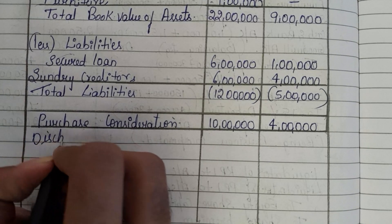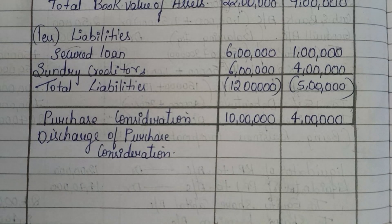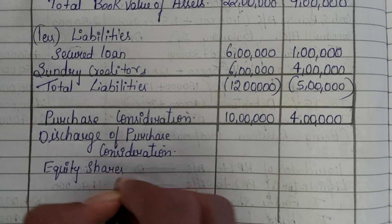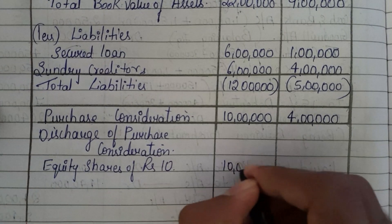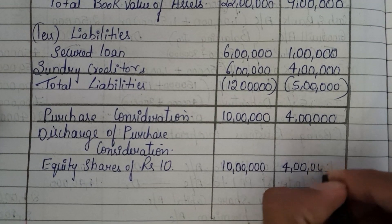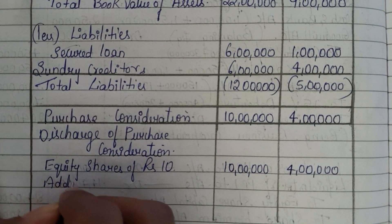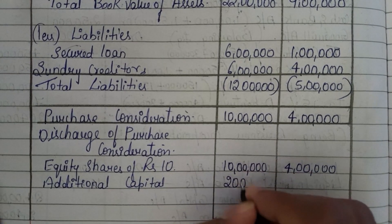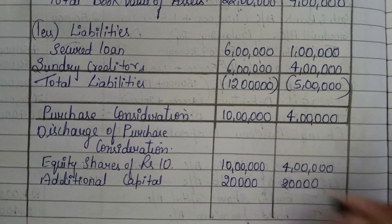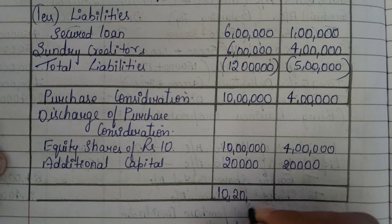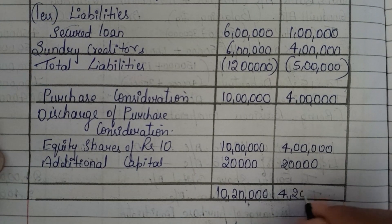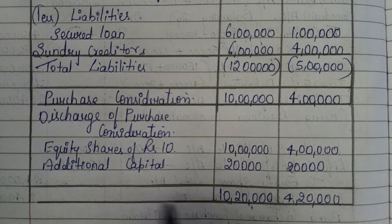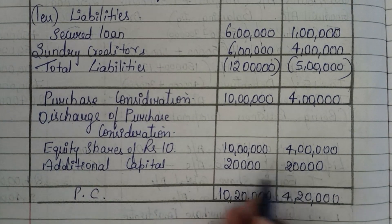Now we need to know the discharge of purchase consideration. They are paying by issue of equity shares of Rs. 10 each — Rs. 10,00,000 and Rs. 4,00,000 respectively. Additionally, they are giving additional capital of Rs. 20,000 each. So in total, for P Limited they are paying Rs. 10,20,000 and for R Limited Rs. 4,20,000. This is our purchase consideration including the additional Rs. 20,000 each.